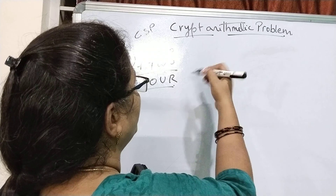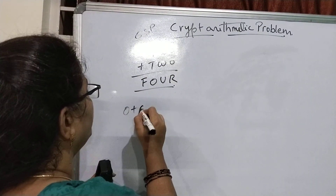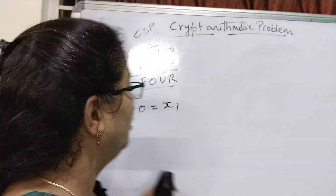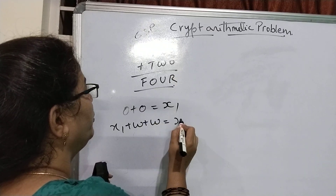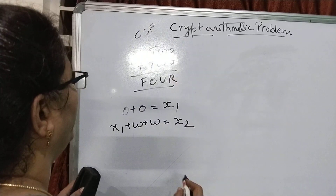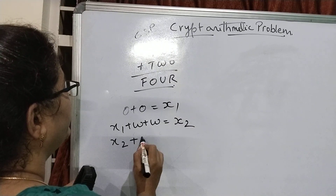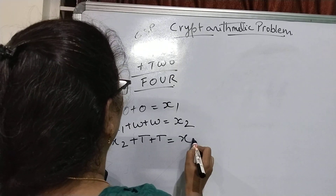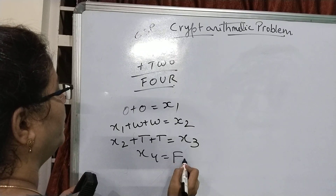To solve this, we break it into a set of equations using auxiliary variables. O plus O equals R plus X1. X1 plus W plus W equals U plus X2. And X2 plus T plus T equals F, with X3 equal to F.